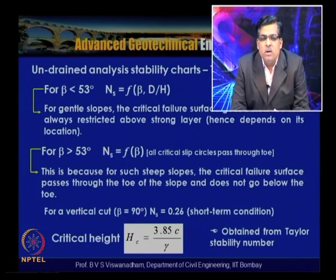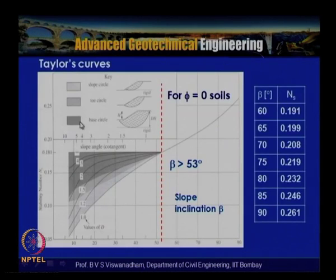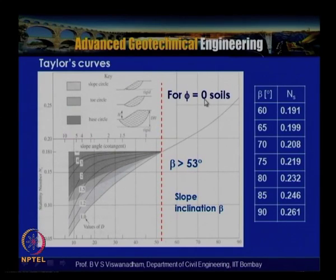For undrained conditions — either slopes or vertical cuts — Taylor's stability number is used in designing centrifuge model tests, particularly for slope inclinations greater than 53 degrees, to show the stability of a slope under undrained conditions.